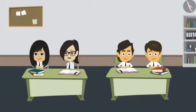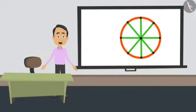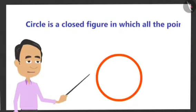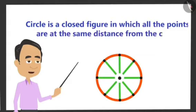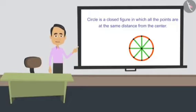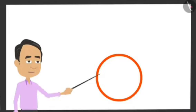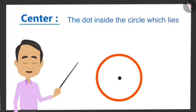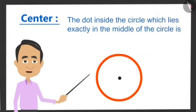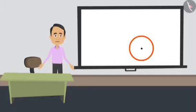We understood these things about a circle. But what is the definition of a circle? If you write properly what you have understood, you will get the definition of a circle. Look, a circle is a closed figure in which all the points located in it are at equal distance from the centre. Sir, now we know the definition of circle, but we have not learnt how to measure it. As soon as I tell you the properties of a circle, you will learn about measuring it. The first property of a circle is the centre — the dot inside the circle which lies exactly in the middle of the circle is called the centre of the circle. And all circles have only one centre.